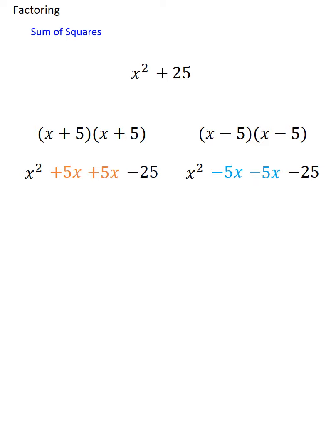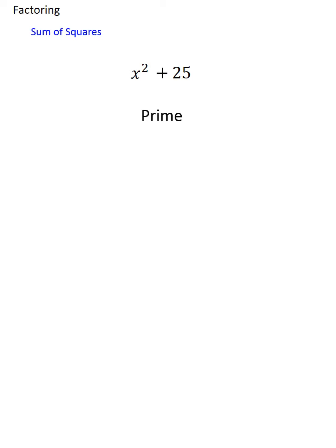Because we get trinomial answers. In one case we get a 10x, in the other case we get a negative 10x. In either case it wouldn't match the original problem. So essentially, if you get a sum of squares, mark it down as prime.